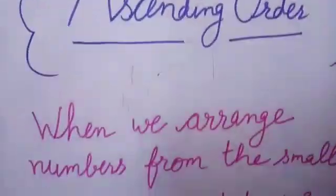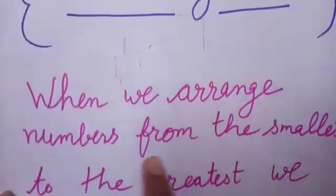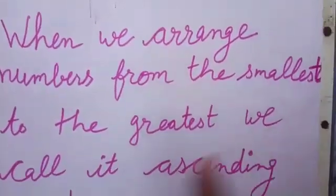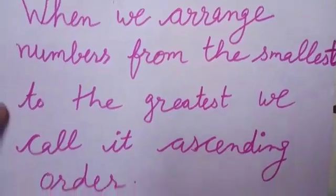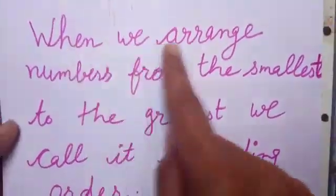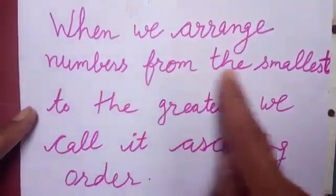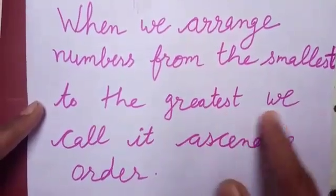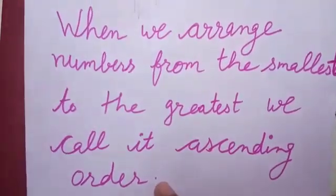Ascending order: when we arrange numbers from the smallest to the greatest, we call it ascending order.